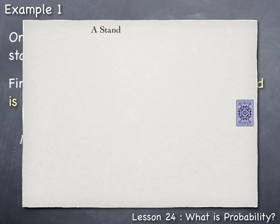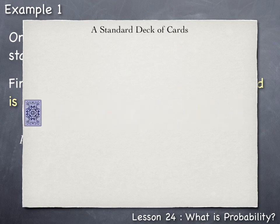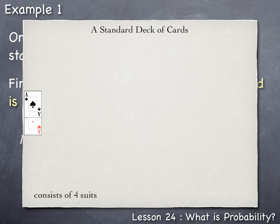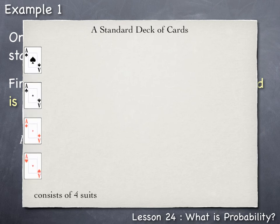A standard deck of cards consists of four suits. The spades and clubs are colored black, and the diamonds and hearts are colored red.